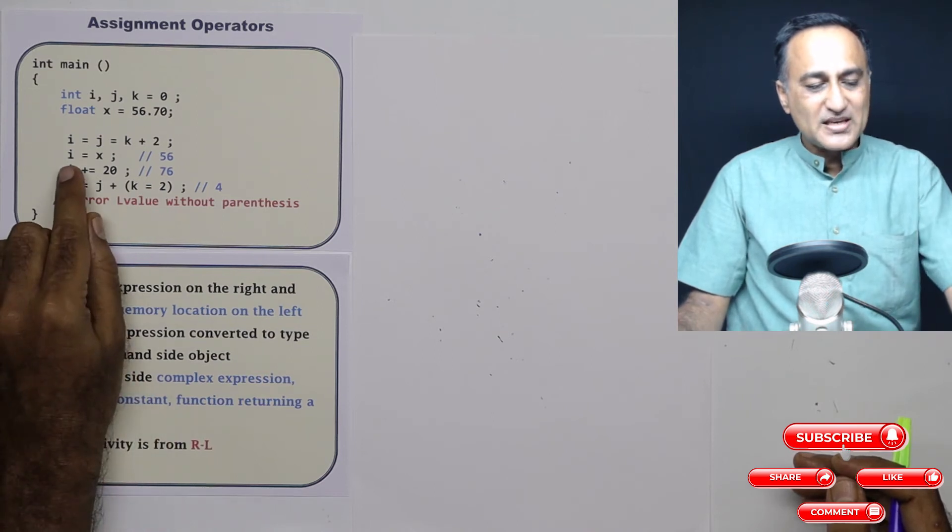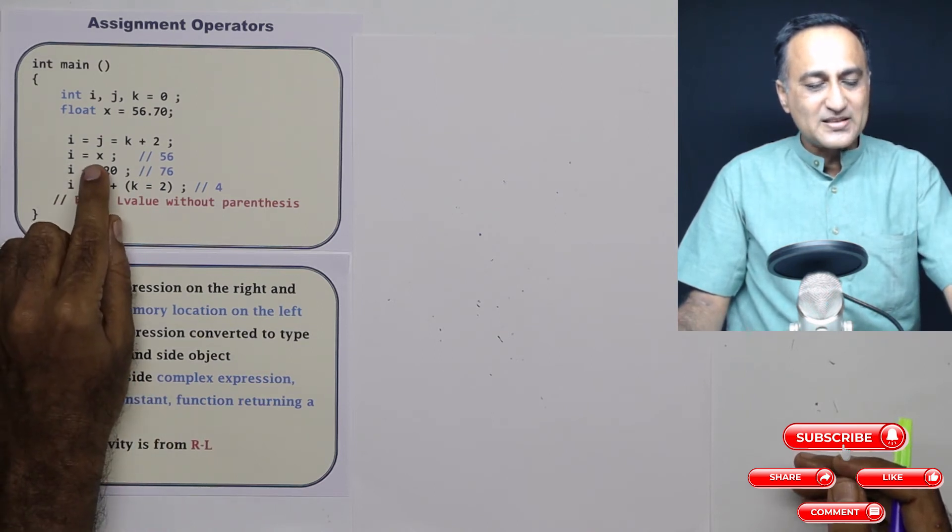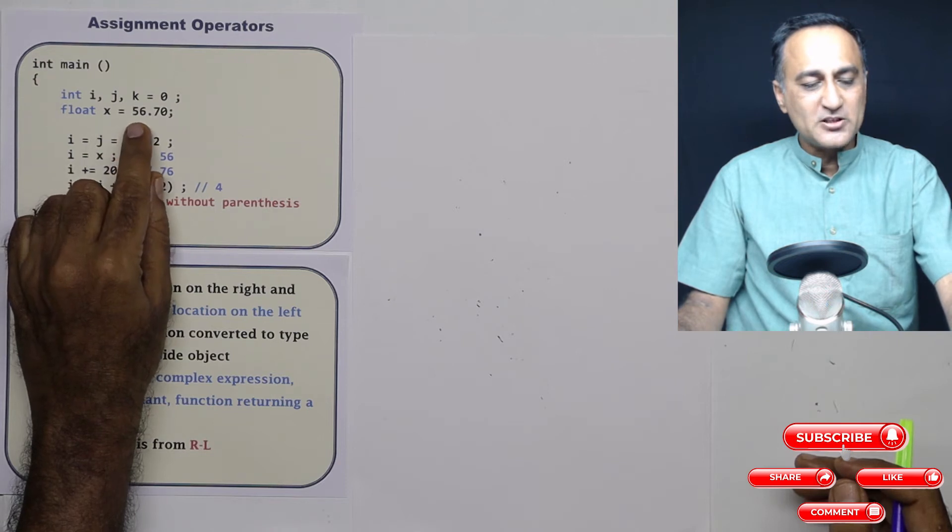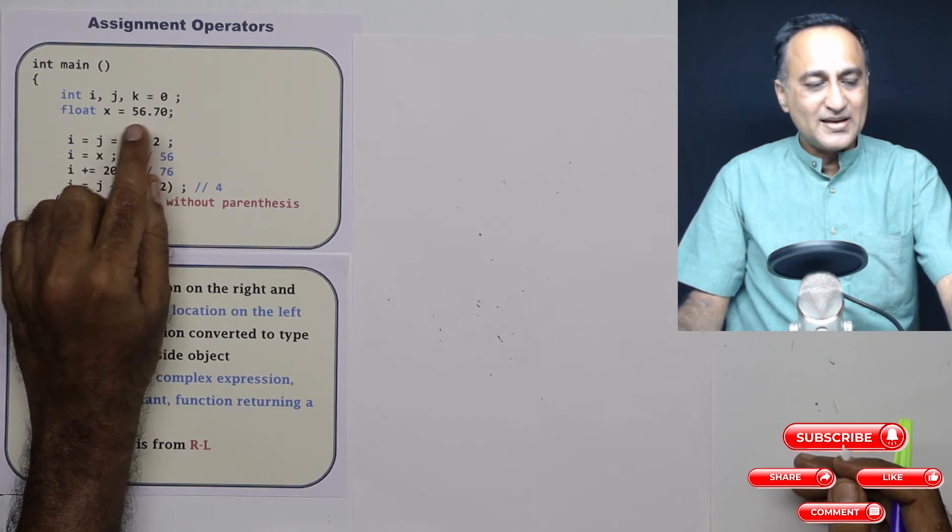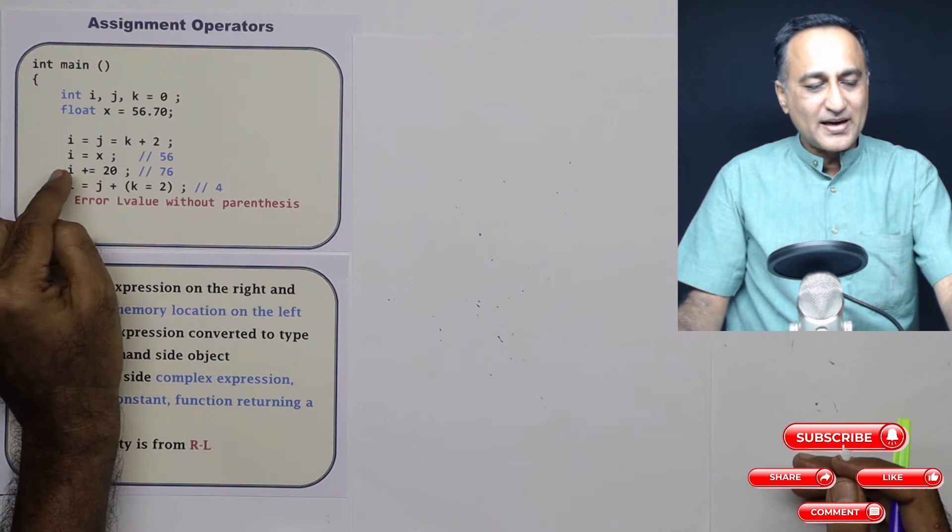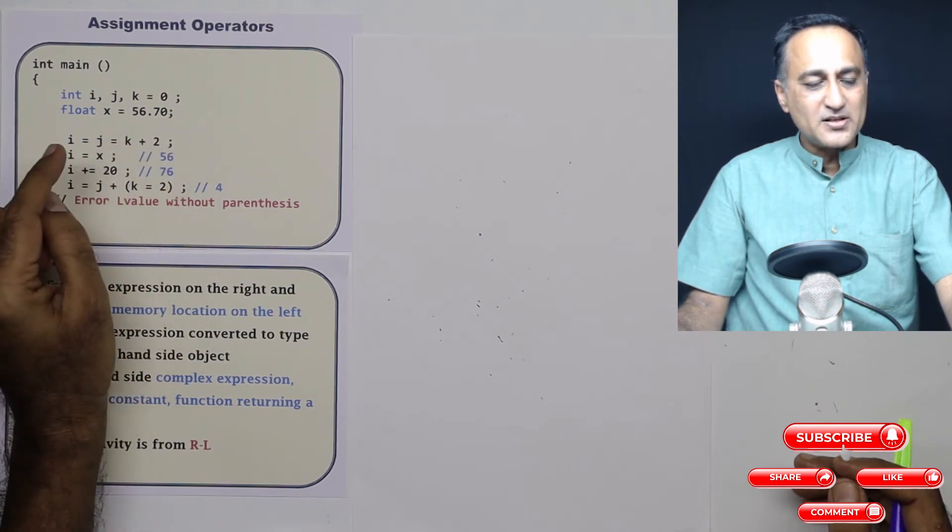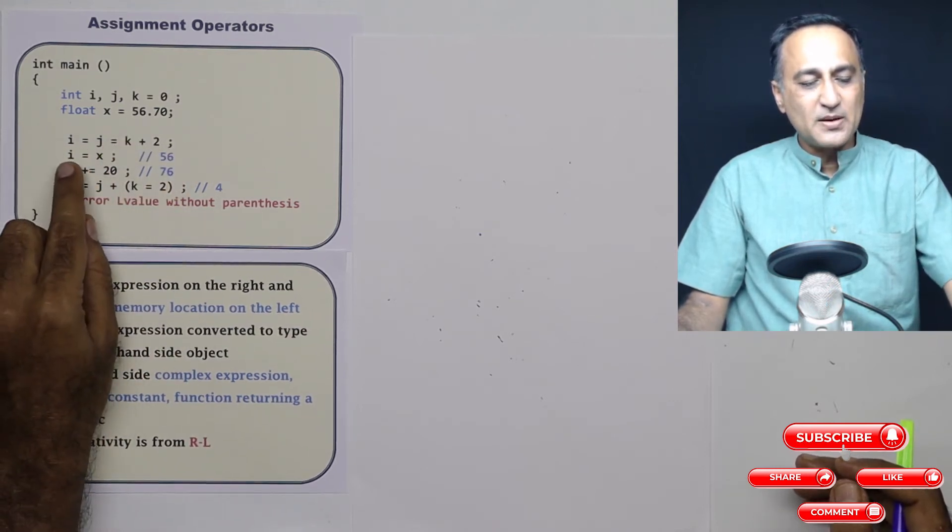Now what I am doing is I am saying i is assigned the value of x. x happens to be a float or real number which is 56.70. Since x is a float but i is an integer, the fractional part is lost, and i only ends up becoming 56.